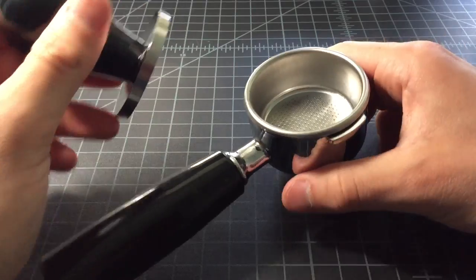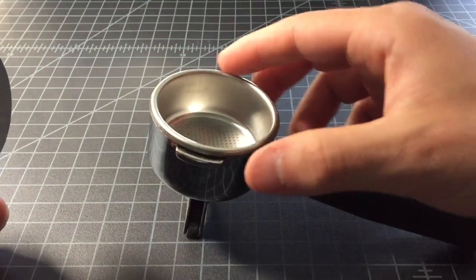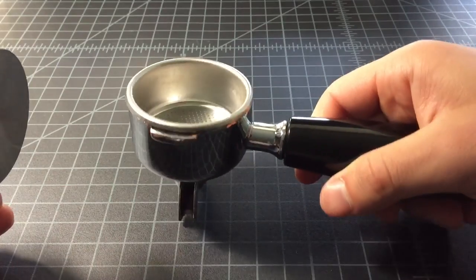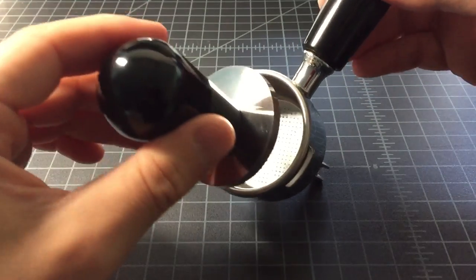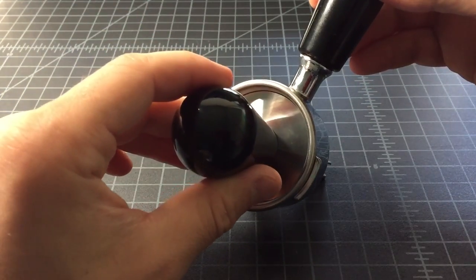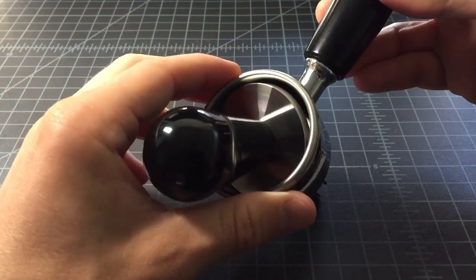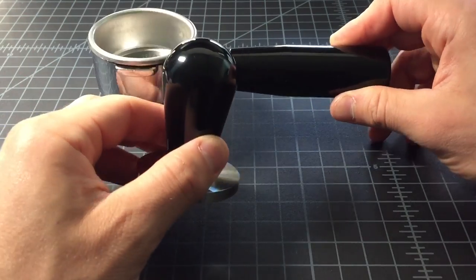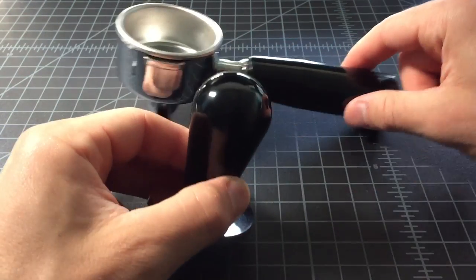And here's a standard Olympia Cremina 67 basket and the standard portafilter. So here it is, just for as matching goes. Spot on. Beautiful match there. It's a black thermoplastic with a black thermoplastic.